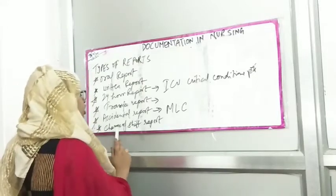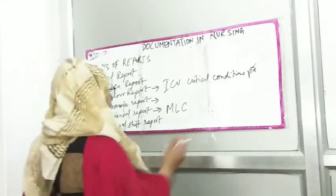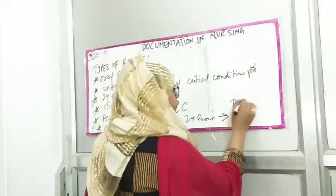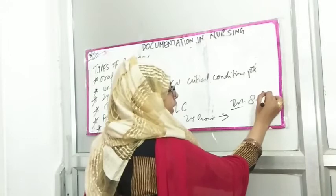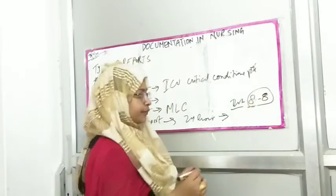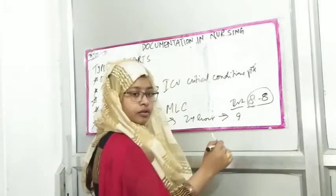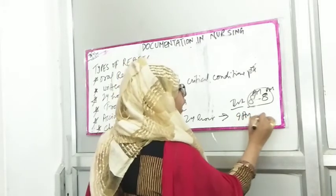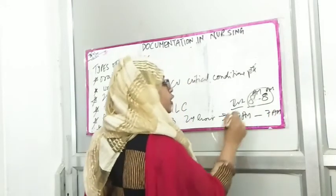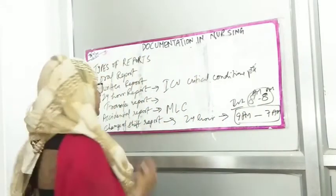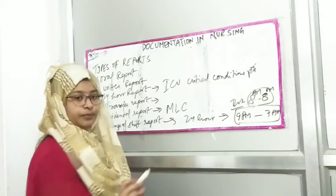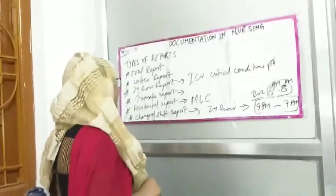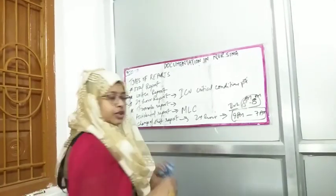Next is the change of shift report. You cannot see the patient 24 hours continuously, so nurses work in shifts — for example, 8 am to 8 pm, and then 9 pm to 7 am. When shifts change, the outgoing nurse gives a report to the incoming nurse about the patient's status. That is the change of shift report. So the types of reports are: oral report, written report, 24-hour report, transfer report, accidental report, and change of shift report. This unit is now completed.